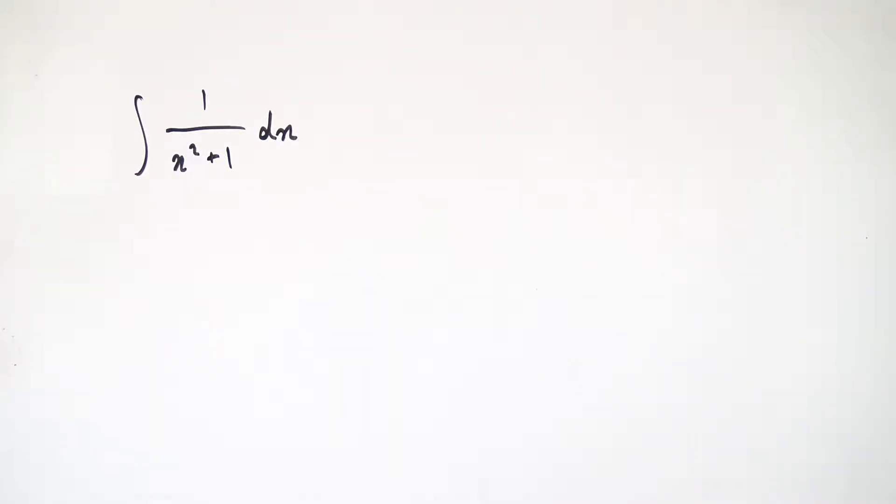So the method we're going to be using today will be trig substitution. To use this method you need to figure out what to substitute and what to substitute for. So let's actually take a look at this function right here, we have 1 over x squared plus 1. You see we have this x squared plus 1 part on the denominator right here and we kind of want to substitute our x for something. So we have x squared plus 1 and we want to turn x into some kind of a trig function maybe.